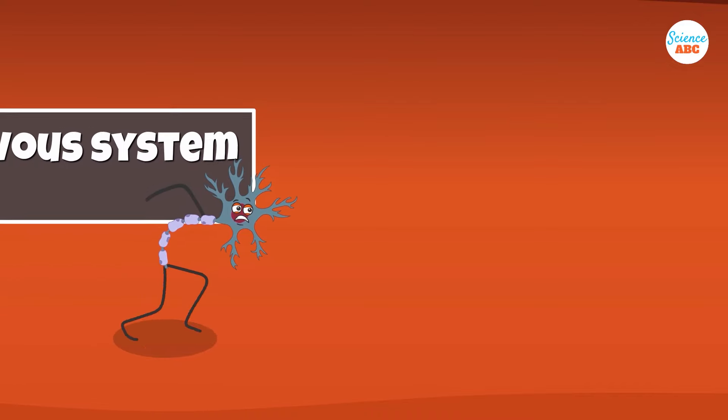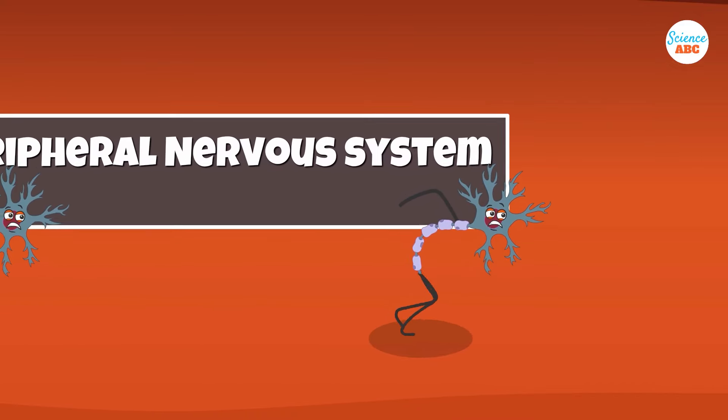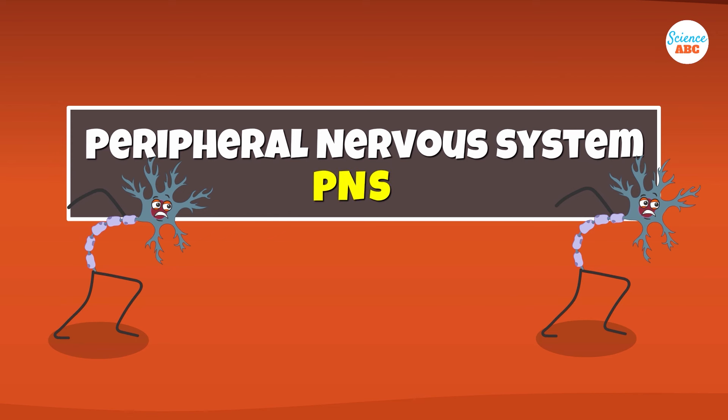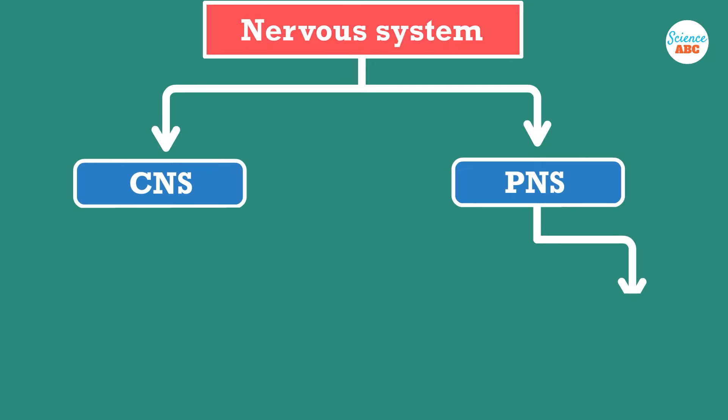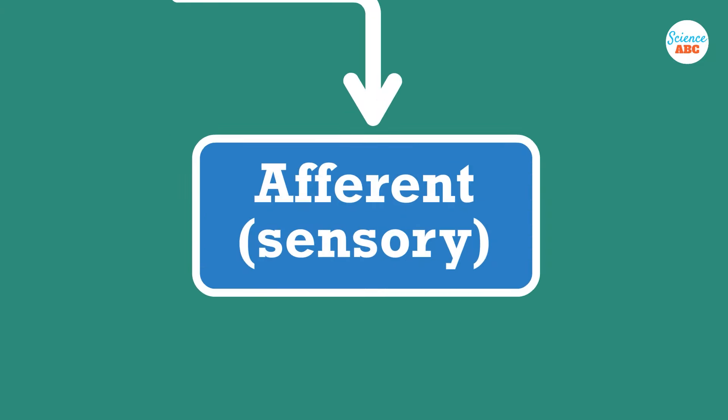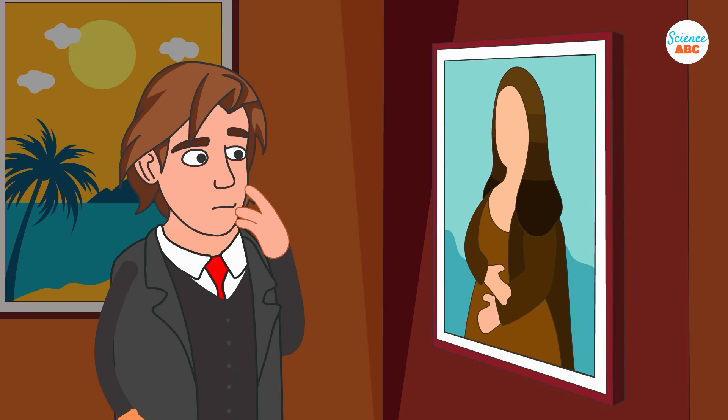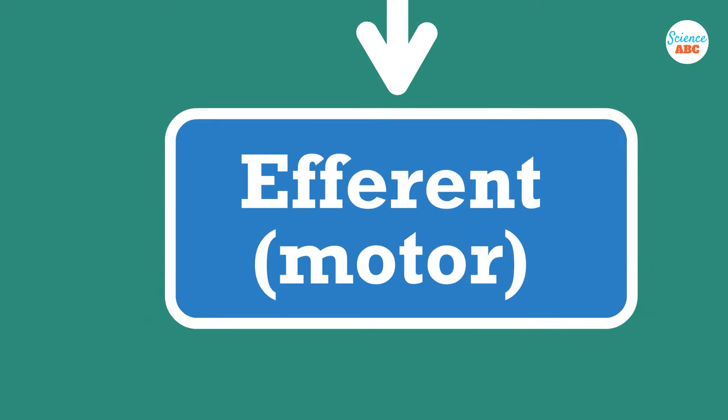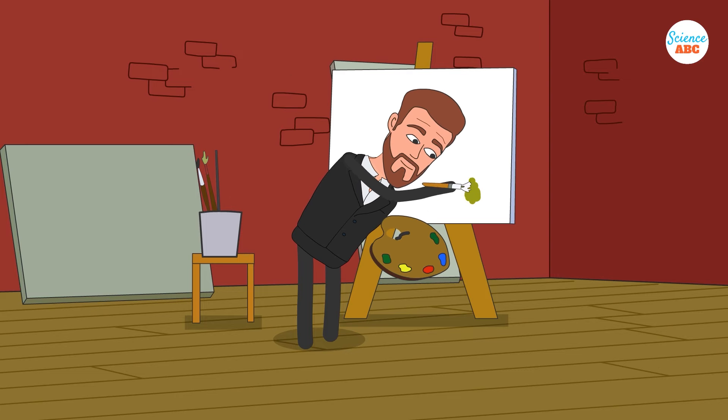Branching out from the CNS is the peripheral nervous system, or PNS. It connects the CNS to the outside world and the body. The PNS is further divided into the sensory portion of the PNS, with neurons that sense the external world, and the motor portion, which controls the various muscles and organs in the body.